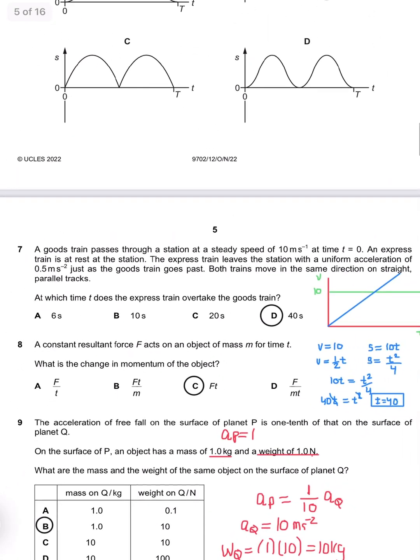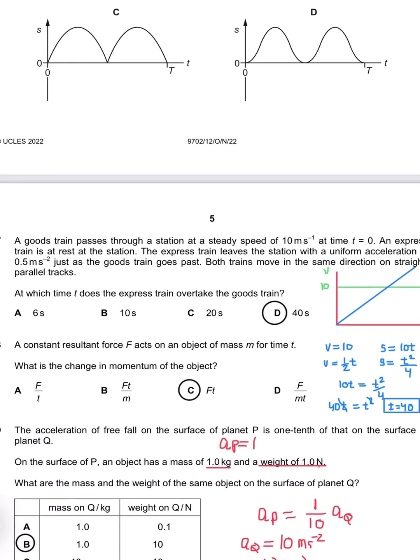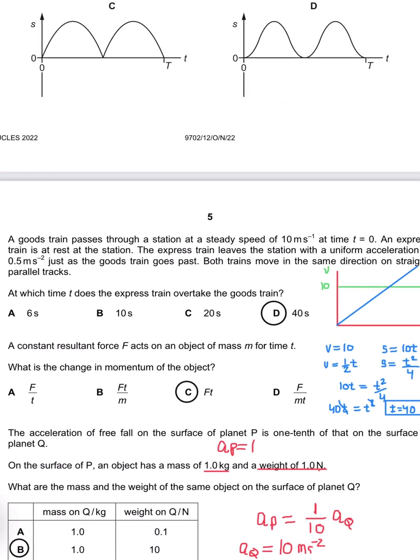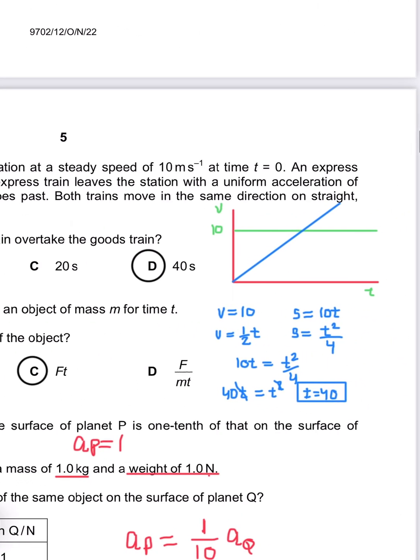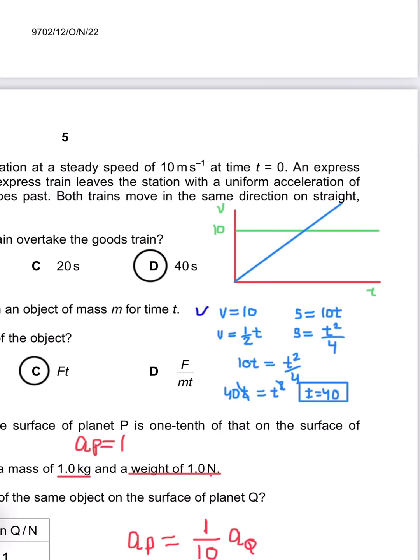Question 7: A train moves with constant velocity and uniform acceleration. At what time do they meet? For the constant velocity, the velocity is 10, so the displacement expression is 10t. For constant acceleration, the velocity-time expression is v equals half t, so the displacement expression is t squared by 4. Equaling them gives t equals 40.